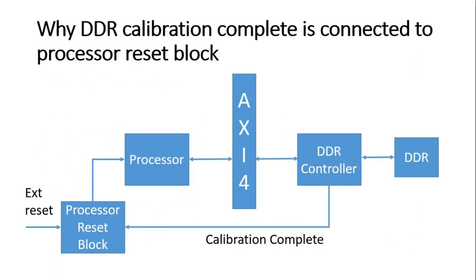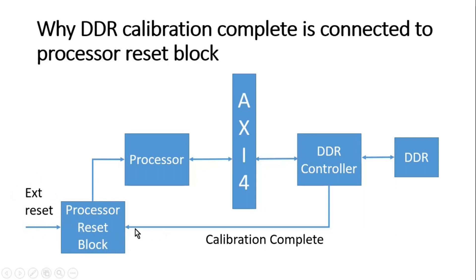The digital system design considered in this video is shown on your screen, where we have a processor block, AXI4 interconnect, DDR controller, DDR, and processor reset block. The question is: why is the DDR calibration complete signal always connected to the processor reset block? This calibration complete signal comes out of the DDR controller and is connected to the processor reset block, which clubs the impact of all the reset signals applied to it.